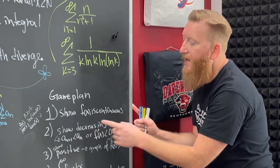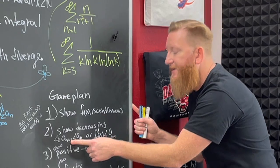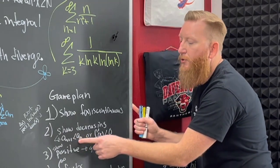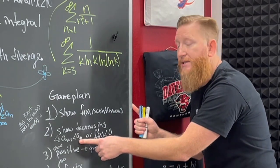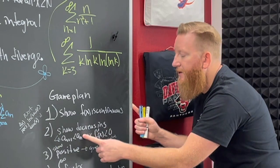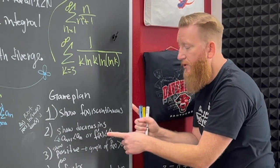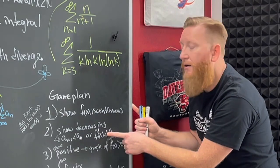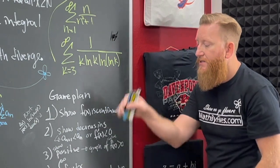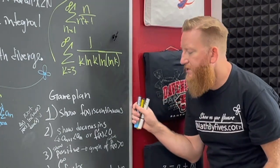Second, show it's decreasing. You can do it algebraically by finding a_{n+1} and through a chain of inequalities showing a_{n+1} < a_n. Another way: if the function is decreasing then the sequence is decreasing — use Calc 1, take the derivative, show it's less than zero, and find those intervals. If the tail is decreasing, your series or integral can possibly converge.